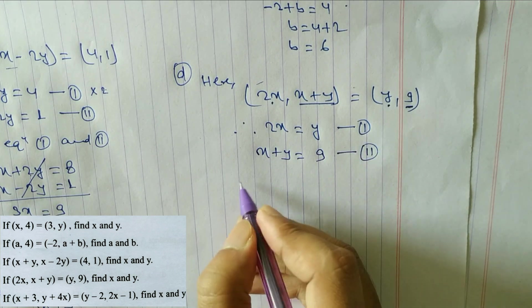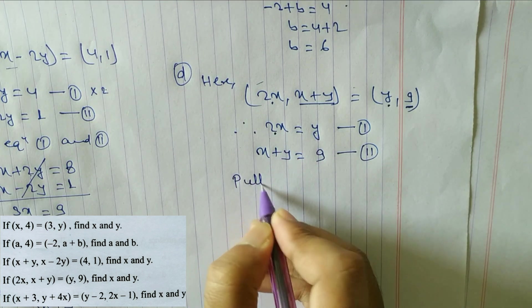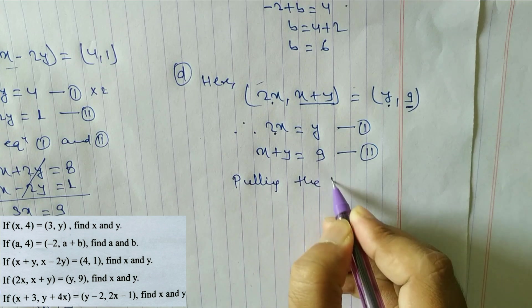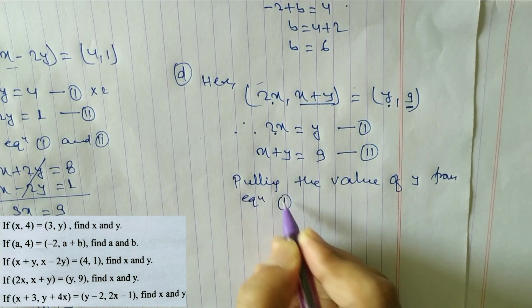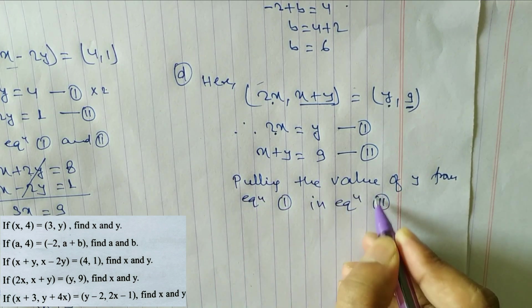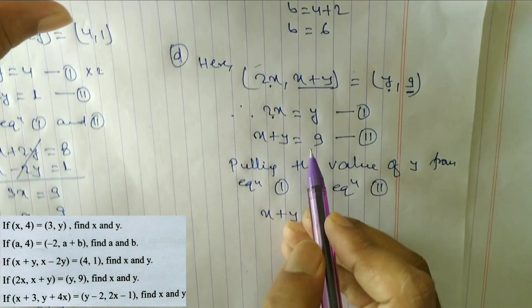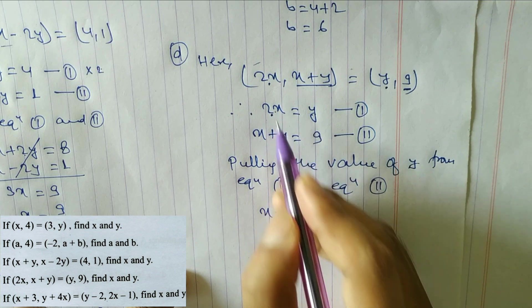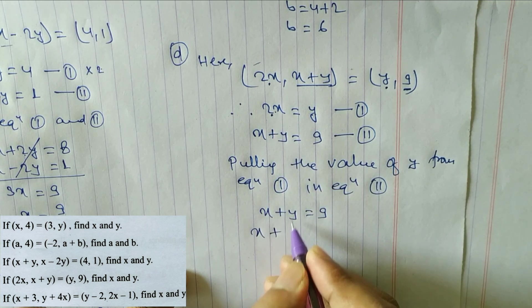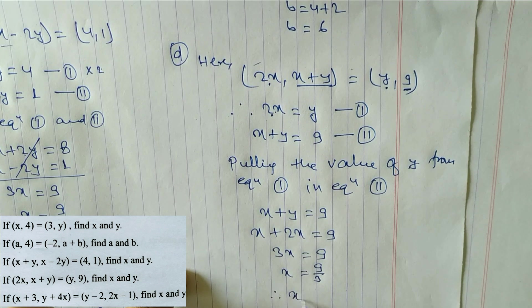From equation 1, y is equal to 2x. Substituting into equation 2: x plus 2x is equal to 9, so 3x is equal to 9, giving x is equal to 3.